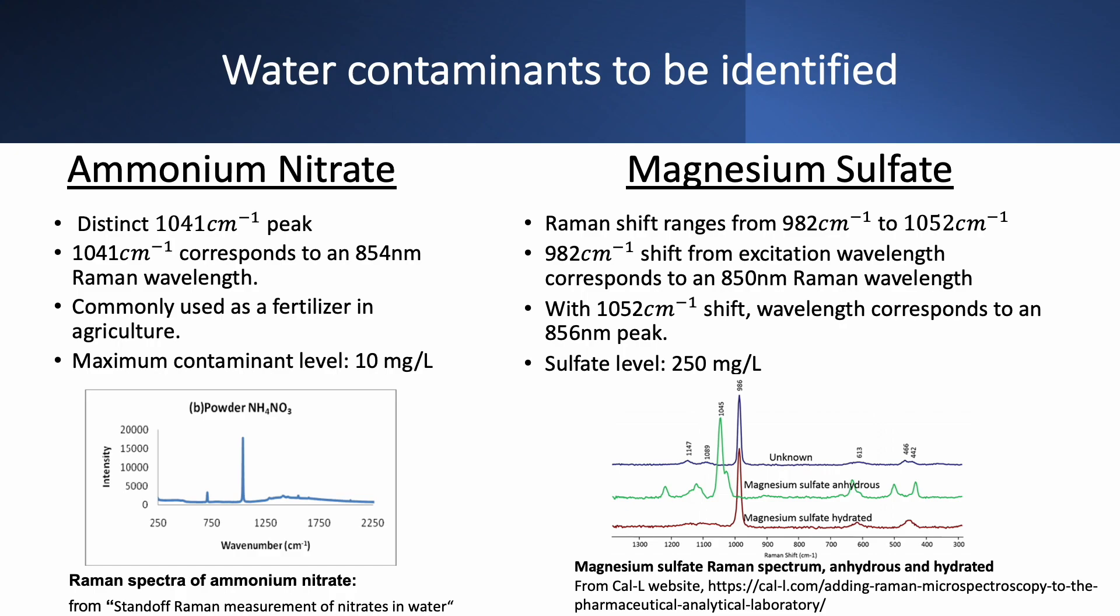The Raman shift range is from 982 inverse centimeters to 1052 inverse centimeters. When using a laser wavelength of 785 nanometers, 982 inverse centimeters corresponds to 850 nanometer Raman wavelength, and a 1052 inverse centimeter shift would correspond to an 856 nanometer peak.